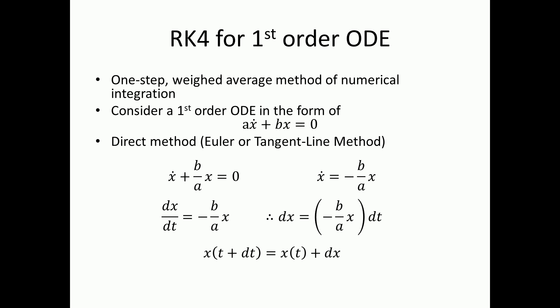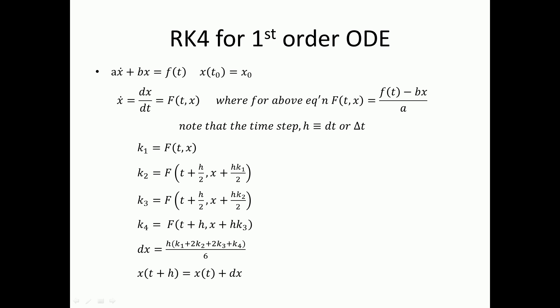Runge-Kutta is a weight average slope method for numerically solving a differential equation. This differs from the simpler Euler method of integration, where the slope of a function is simply multiplied by the time step in order to get the change in position. Runge-Kutta, on the other hand, uses a weight average of four slopes in order to obtain the change in position, as can be seen here.